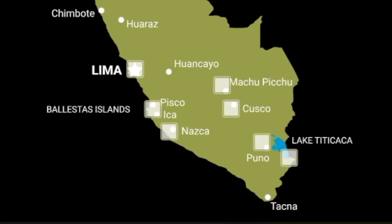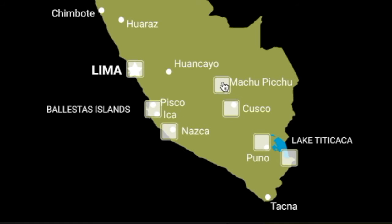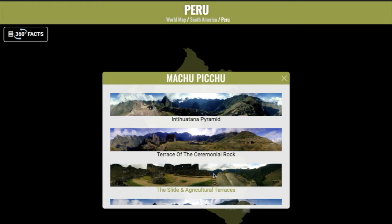The flashing icons highlight the 360 destinations you can select. Click and a drop-down menu with 360 degree panoramic images will appear. Click on any 360 image to visit that location.